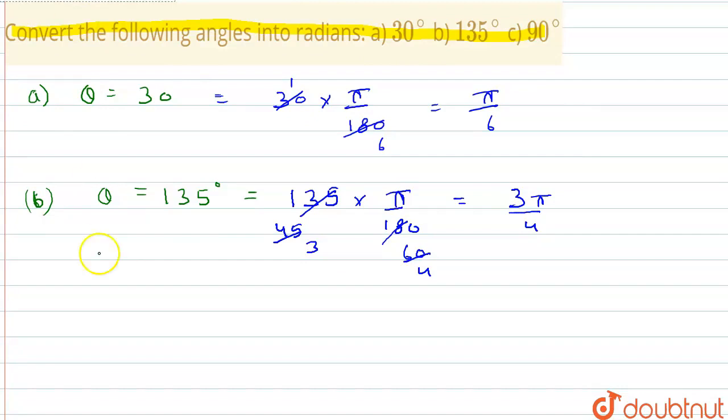So C part, that is theta equals 90 degrees. For this again I will write the given angle, that is 90 into pi by 180 degrees. Now 90 ones are 180. This would be pi by 2. Thank you.